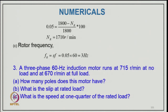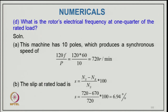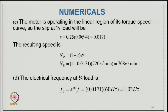Numerical Example 3: A three-phase 60 Hz induction motor runs at 715 RPM at no load and 670 RPM at full load. The machine has 8 poles producing synchronous speed Ns = 120×60/8 = 900 RPM — correction: given no-load speed ~715 RPM, the motor has 10 poles giving Ns = 720 RPM. Slip at full load: s = (720 − 670)/720 = 6.94%. At one-quarter rated torque (linear region): s = 0.25×0.0694 = 0.0174; speed Nr = 720×(1 − 0.0174) ≈ 708 RPM; rotor electrical frequency fr = 0.0174×60 ≈ 1.03 Hz.